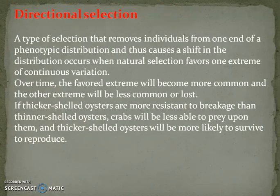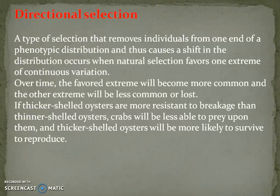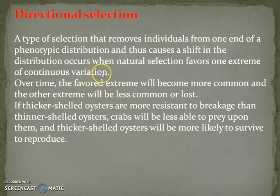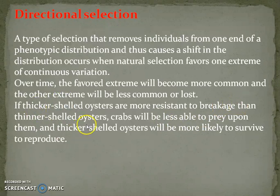Natural selection can be categorised into three or four groups. The first is directional natural selection, which is progressive — environmental conditions change in one direction. It is a type of selection that removes individuals from one end of the phenotypic distribution, causing a shift in the distribution. It occurs when natural selection favours one extreme of continuous variation. Over time, the favoured extreme becomes more common and the other becomes less common or lost. For example, thicker-shelled oysters more resistant to crabs will be more likely to survive and reproduce.